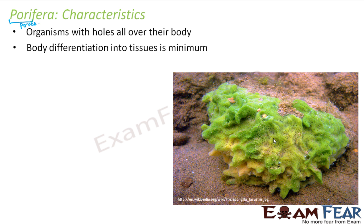Their body differentiation into tissues is minimum. As they have the cellular level of organization, their body is nothing but aggregates of cells. There is no specialization of cells or grouping of cells to form tissues, so the body differentiation is minimum. In short, they have a cell aggregate body plan.